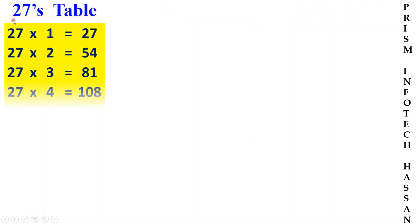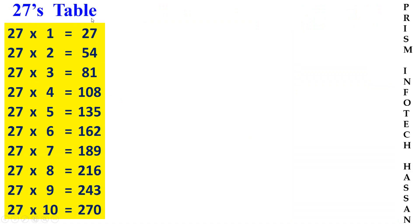27's table. 27, 1 times 27. 27, 2 times 54. 27, 3 times 81. 27, 4 times 108. 27, 5 times 135.